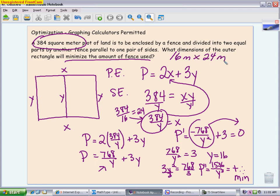So that means my fence should be dimensions of 16 meters by 24 meters. Or you could come to your picture and label all your X's and Y's - this is 24, and this is 24, and this is 16, 16, 16.